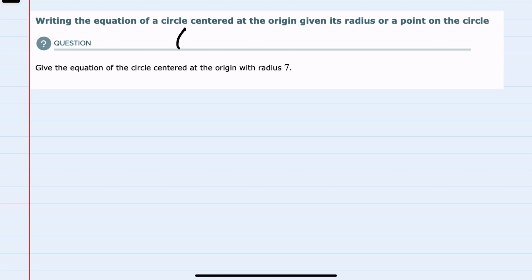So the standard form for the equation of a circle is (x - h)² + (y - k)² = r². And since the circle is centered at the origin, then my center (h, k) will be (0, 0), and I'm told that my radius is 7.